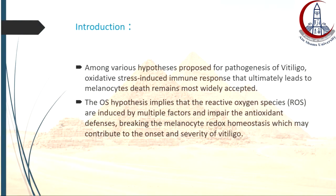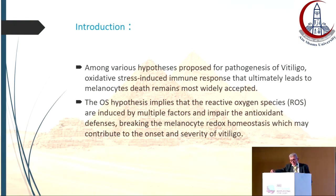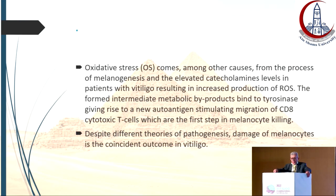Among various hypotheses proposed for the pathogenesis of vitiligo, oxidative stress-induced immune response that ultimately leads to melanocyte death remains the most widely accepted. The oxidative stress hypothesis implies that reactive oxygen species, induced by multiple factors, impair the antioxidant defense, breaking the melanocyte redox homeostasis, which may contribute to the onset and severity of vitiligo.